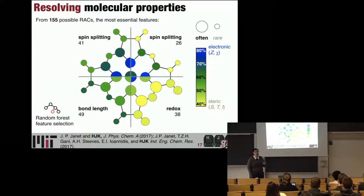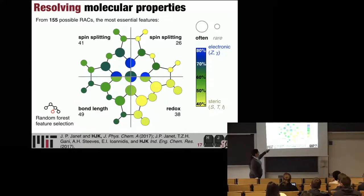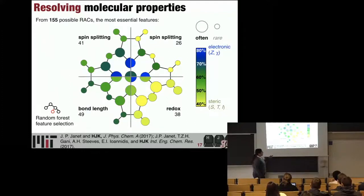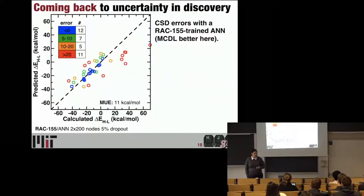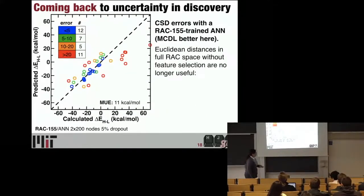That doesn't mean one feature set can't be predictive, but it gives you a roadmap for orthogonal design — you can think about designing atoms close to the metal as determining spin state and atoms further away as tuning redox. I have literally one minute to come back to uncertainty, and I rushed straight through it so I could. This is a RAC features neural net, and what we wanted to do was answer the question of how do we address uncertainty.